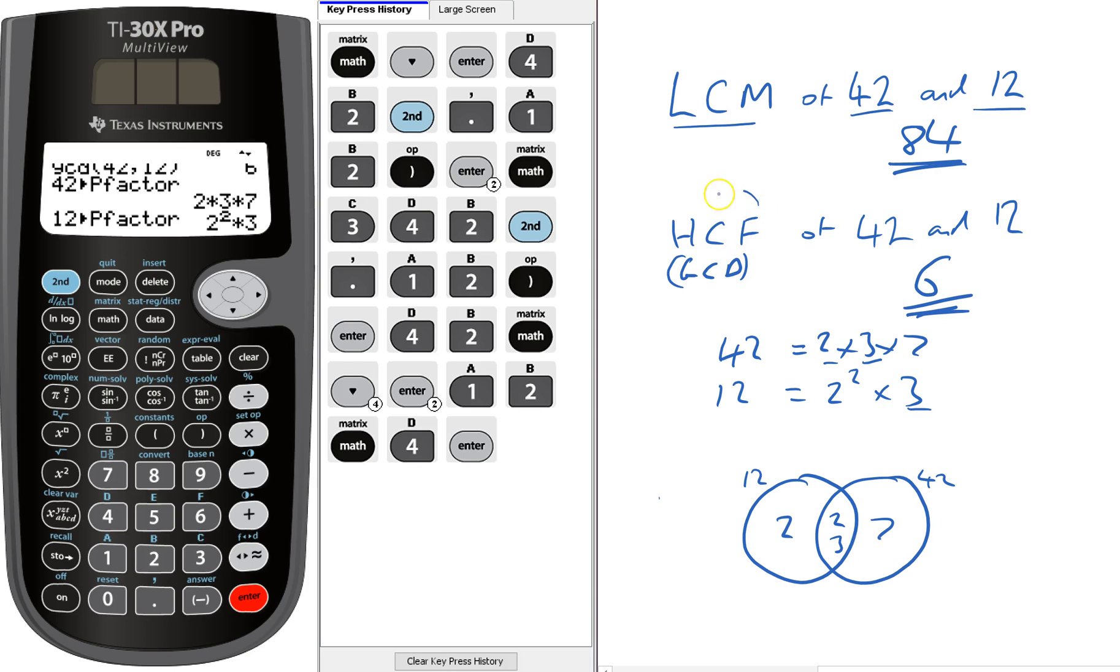So our greatest common divisor or highest common factor is 6. That's the numbers shared in the middle.